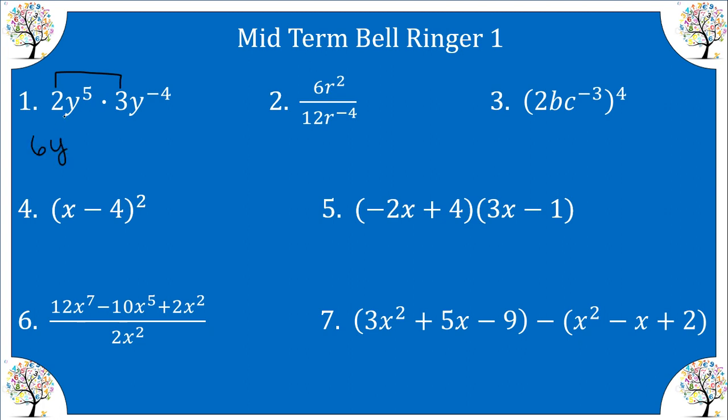and then we have a variable, and we can simplify this using the product rule of adding exponents. So that gives us six Y to the first, or simply six Y.